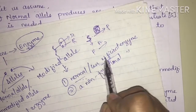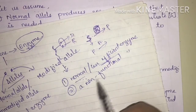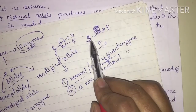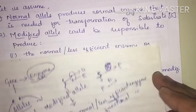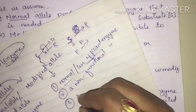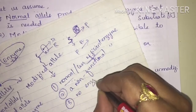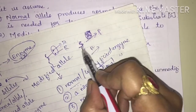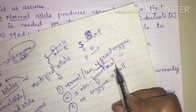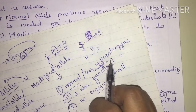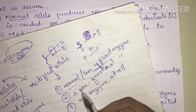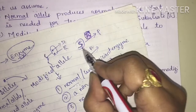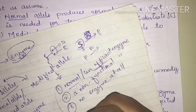In the second case, the modified allele produces a non-functional enzyme — meaning it produces an enzyme, but it is not functioning. So the substrate will remain as it is. In the third case, the modified allele produces no enzyme at all, so substrates start to accumulate. These are the three cases that can happen with the modified allele.